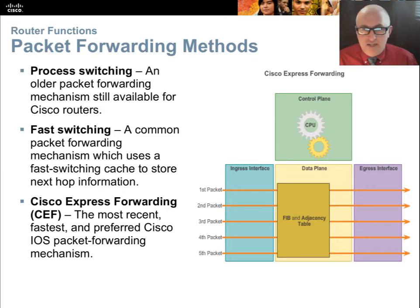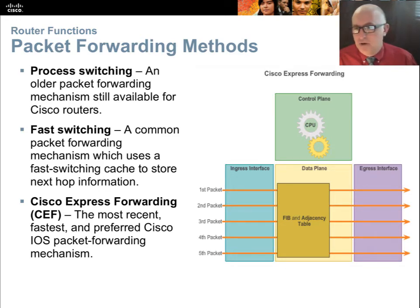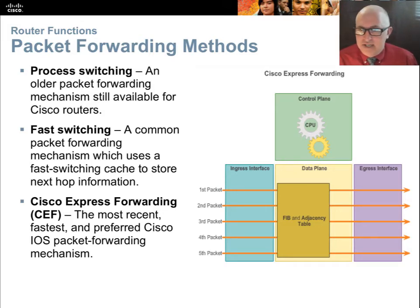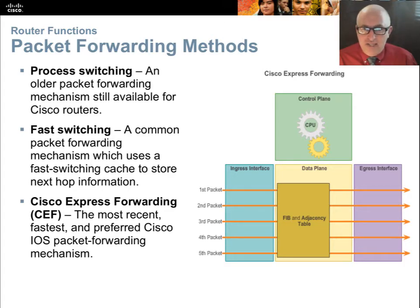An analogy for fast switching's cache would be a modern hard drive or CPU cache — a quick reference storage area. It's similar to Microsoft Office's Open Recent: if you go to File > Open Recent, it gives you a list of the last 10 files you opened. Commonly used paths would route faster. If a destination is not in the cache, it falls back to process switching — it checks the cache first, and if there's no information about the destination, it reverts to process switching.